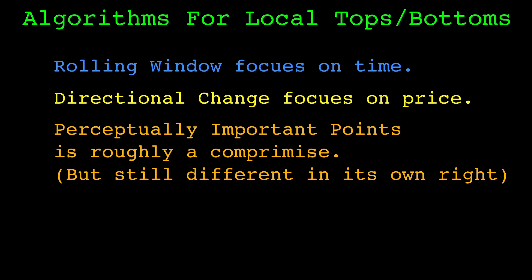The perceptually important points method is quite a bit different from the other two methods. It selects points based on its distance from adjacent selected points. Its focus is loosely a middle ground between the time-focused rolling window method and the price-focused directional change method.